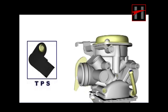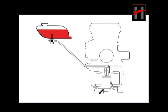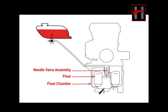The fuel inlet system and float system of the carburetor consist of a float chamber and float needle valve assembly. The fuel from the tank enters into the carburetor's float chamber by passing through the fuel cock, filter, and needle valve, which is controlled by the float.